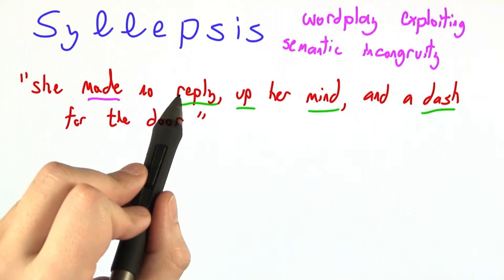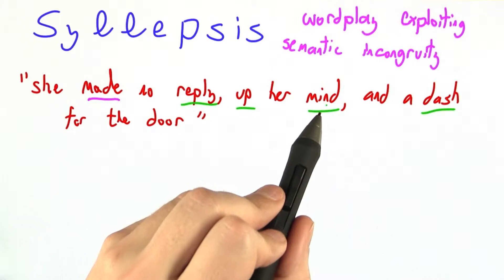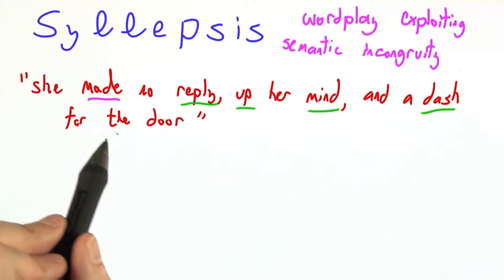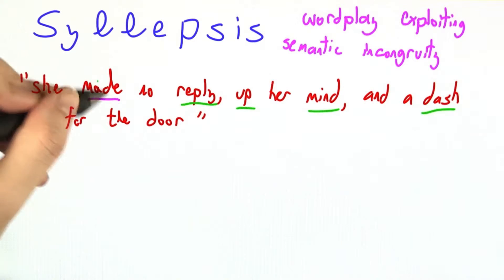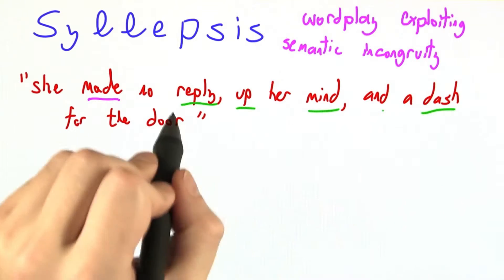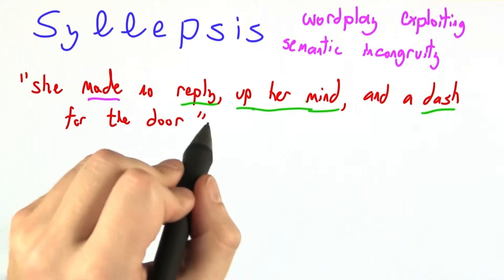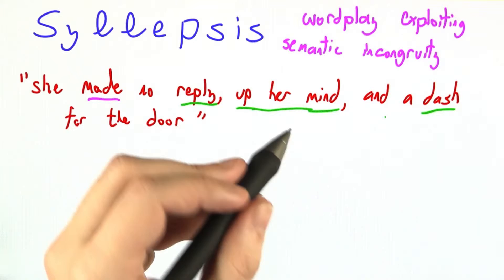Making a reply means to speak, making up your mind means to decide something, and making a dash for the door means to run for the exit. But because we have this one function, if you'll permit me, being applied to these three different types of arguments, there's an incongruity, which some may find humorous.